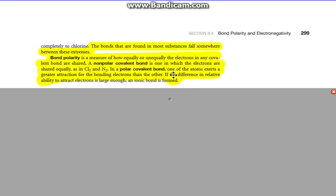In a polar covalent bond, one of the atoms acquires a greater attraction for the bonding electrons than the other. If the difference in relative ability to attract electrons is large enough, the electron is completely stripped away, and we get a negative charge and a positive charge formed, creating an ionic bond.